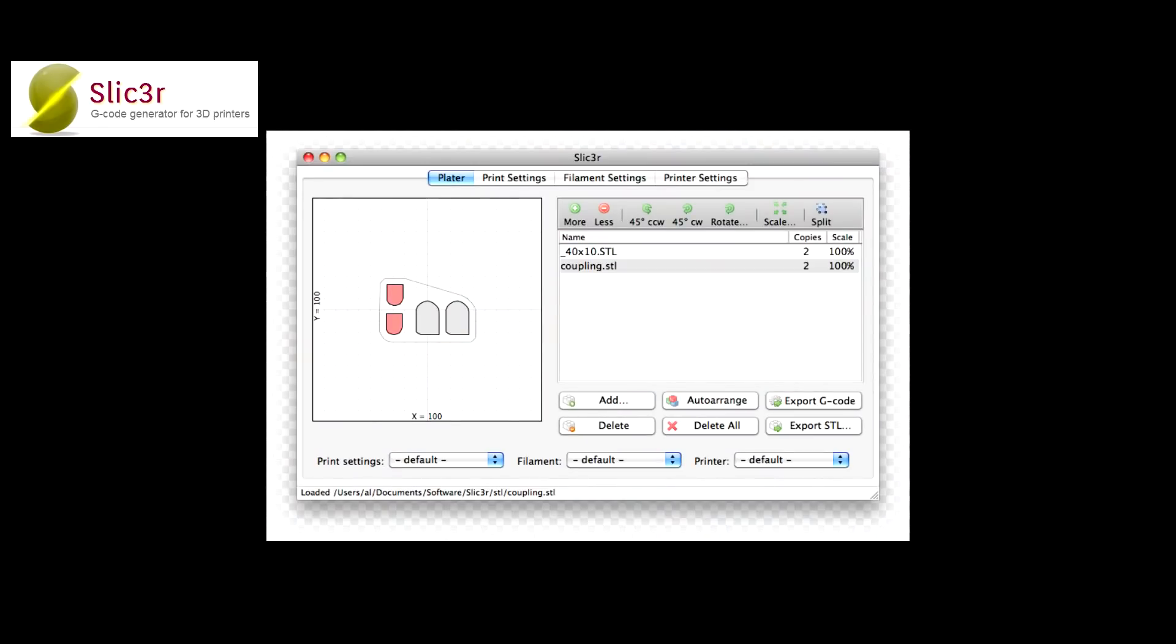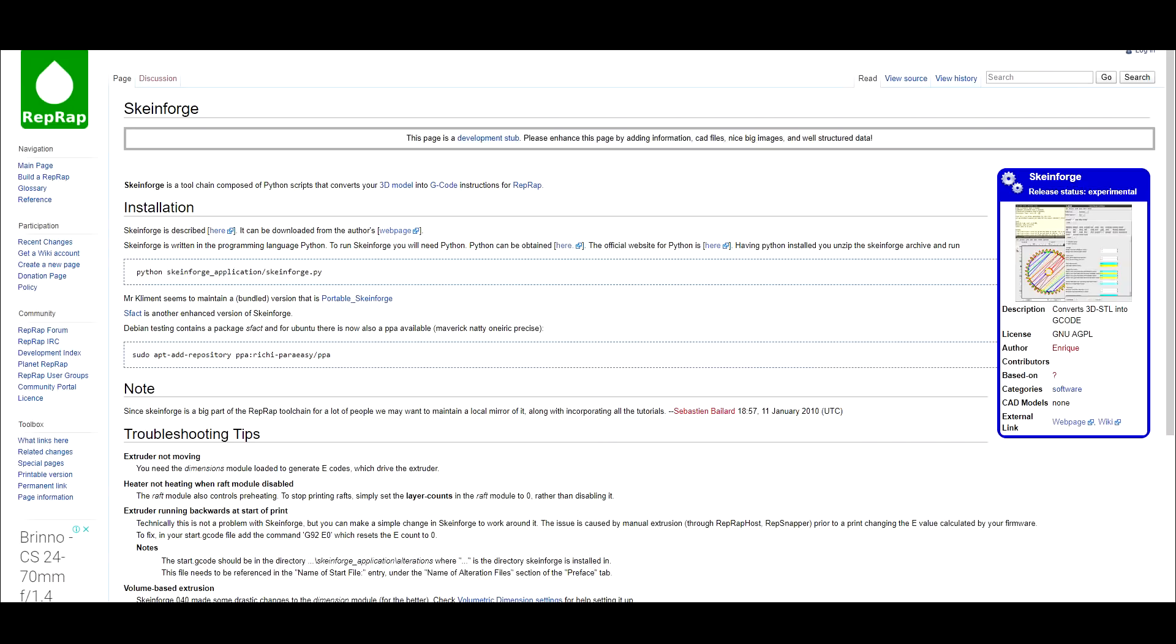Something that varied dramatically to today was the slicing software. There was no Cura and there was no Simplify3D. Back then, even Slic3r was brand new, and not many people were using it or even trusted it. The slicing engine of choice was Skeinforge. This was open source and from memory it was based off Python.